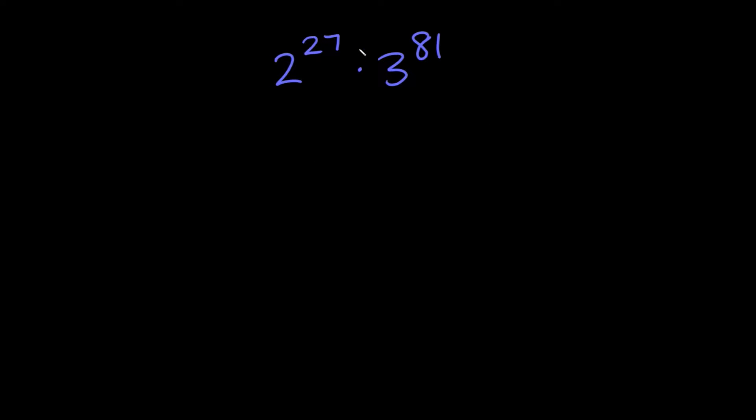Now here we have 2 raised to the 27th times 3 raised to the 81st power. You always want to find a way to match either the bases or the exponents. In this case we can actually match the exponents because if you notice something, 81 is a multiple of 27, right? 27 divides evenly into 81.